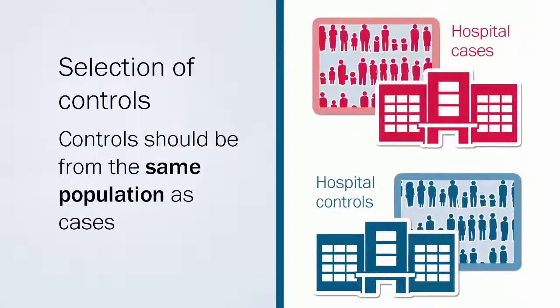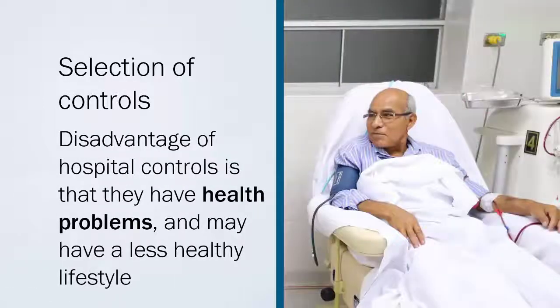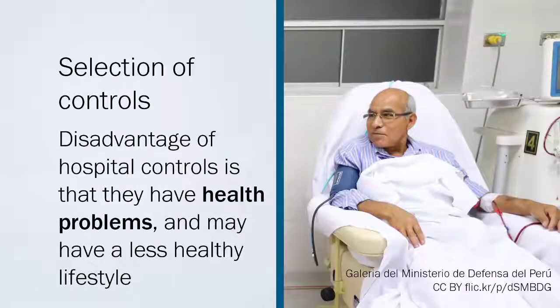A common rule for choosing cases and controls is hospital cases, hospital controls. When cases of an eye disease, hospital controls could be chosen from the general surgery ward, for example. The disadvantage of hospital controls is that they have health problems and may have a less healthy lifestyle, for example smoking.